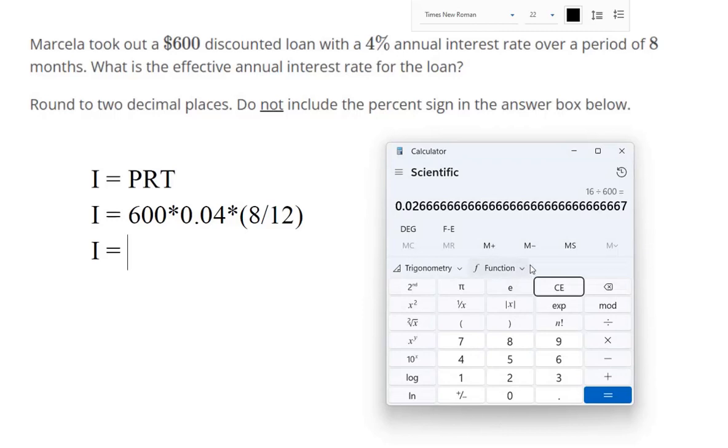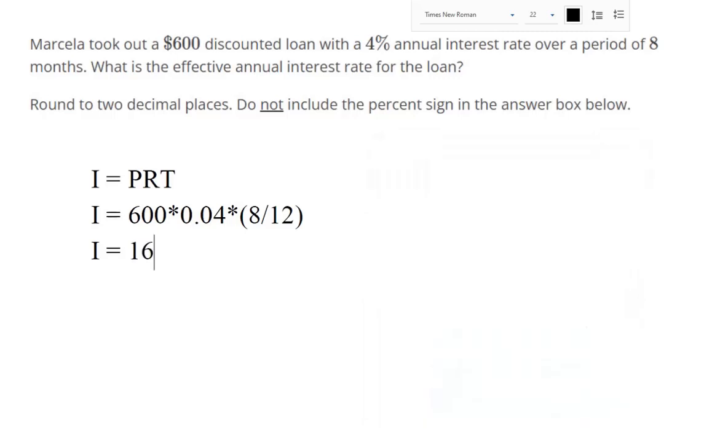So, if you run this through the calculator, you get $16. So, we're not receiving $600. We're receiving $584, right? Because it's discounted.